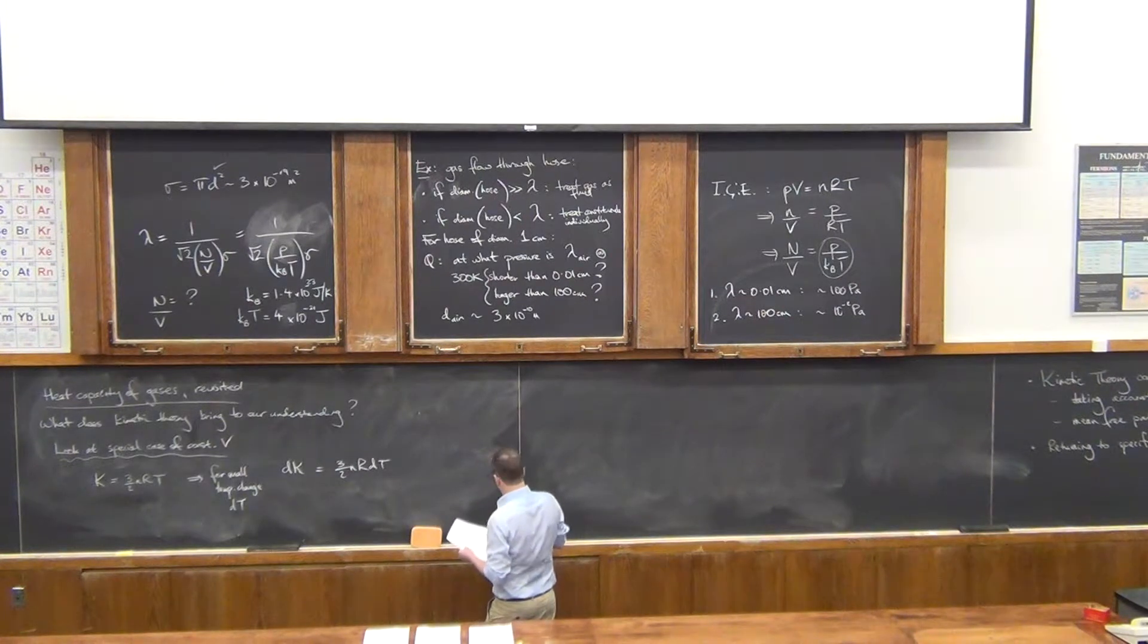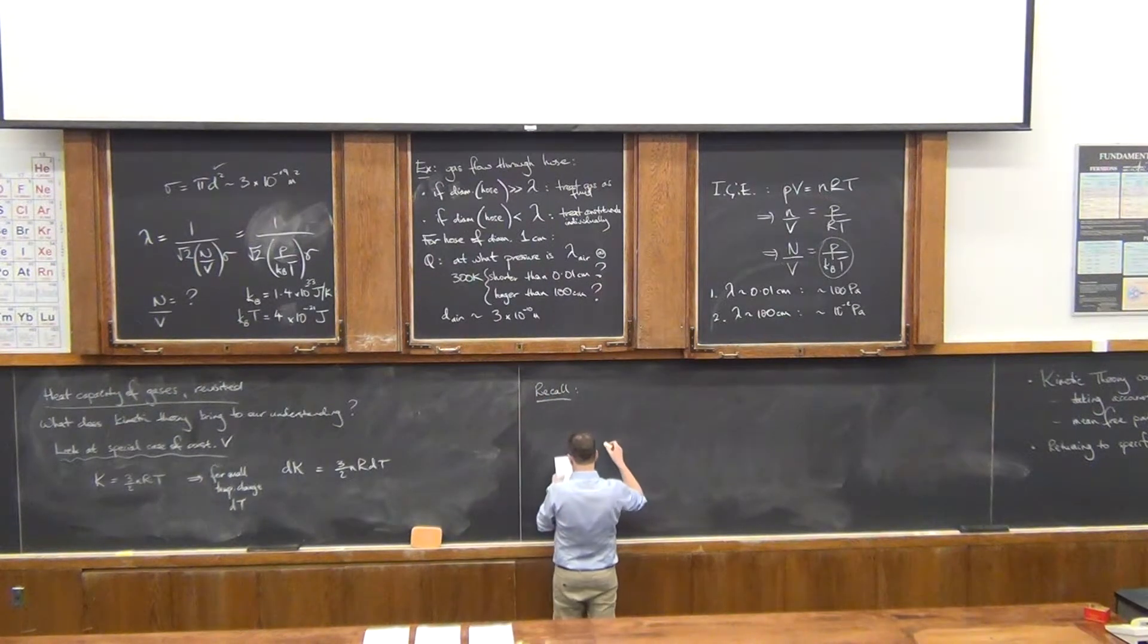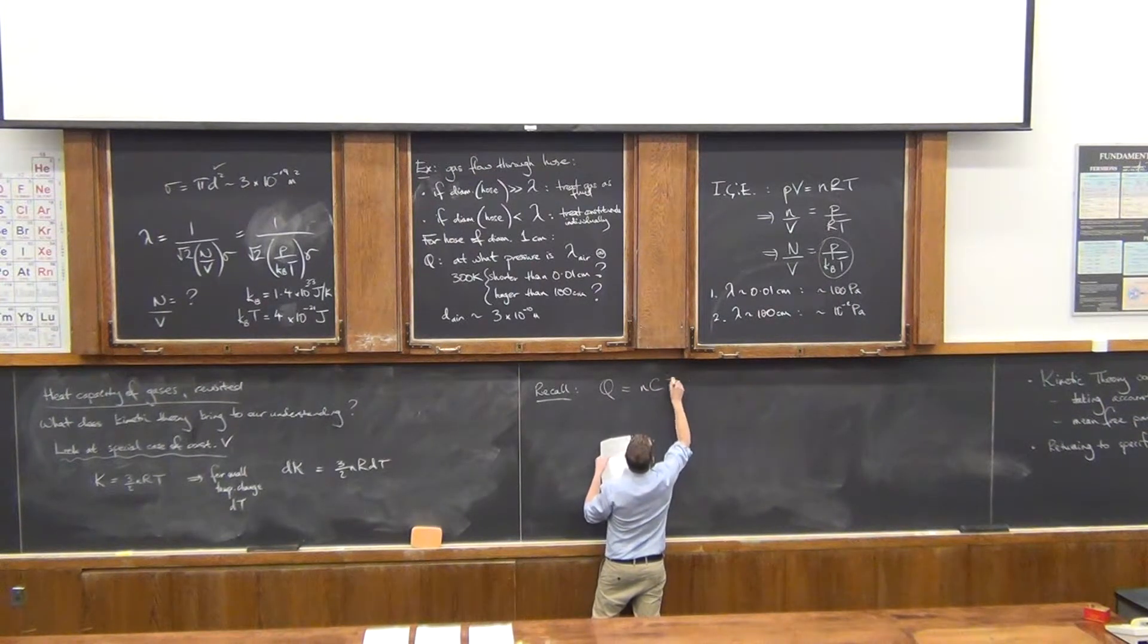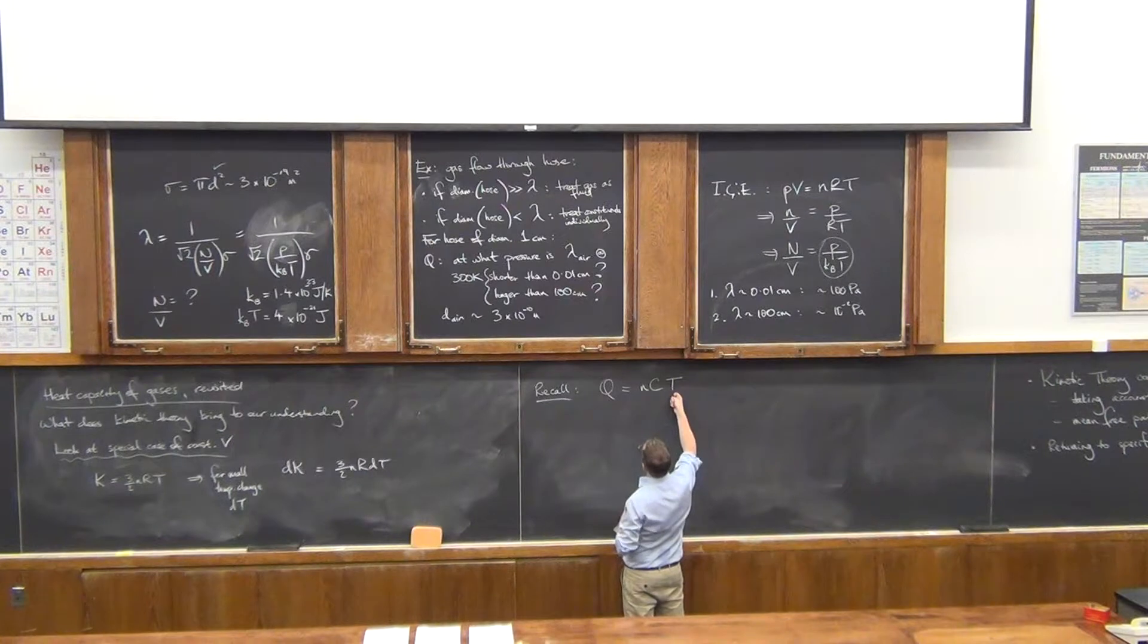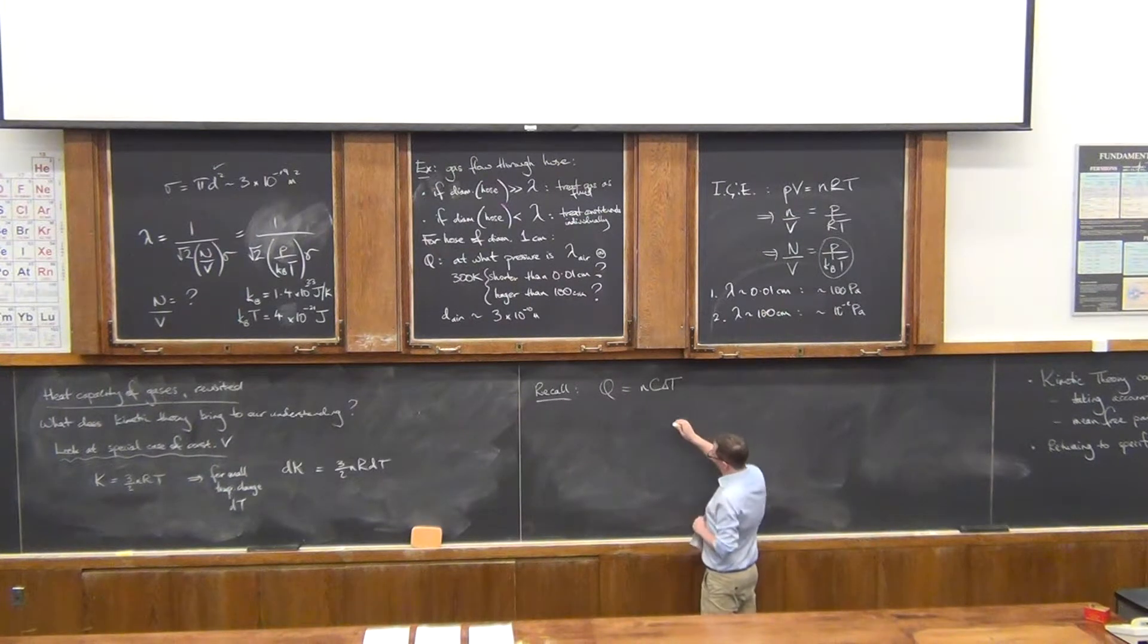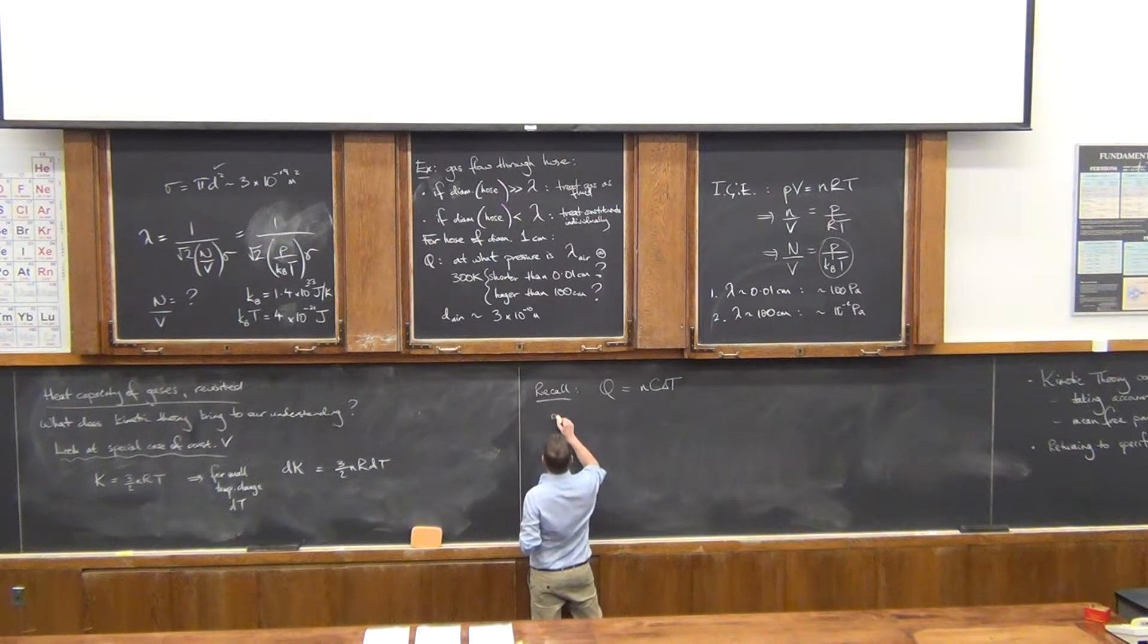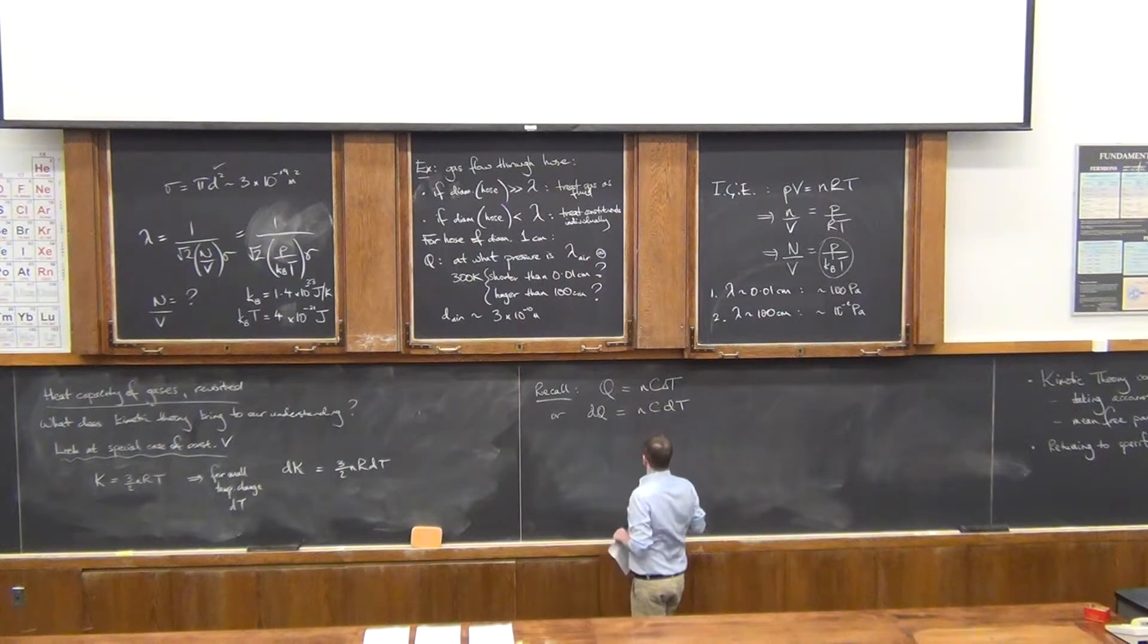Then I'm going to take us back to last week and remind you of the relationship we had in terms of thermal energy transfer. We had this. So this was in terms of heat capacities. So we've got a temperature amount, an amount of thermal energy transfer. And here's our coefficient corresponding to heat capacity. What I'm going to do is make this explicitly for a small change. So dQ equals nC dT.